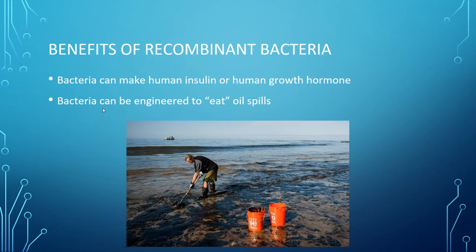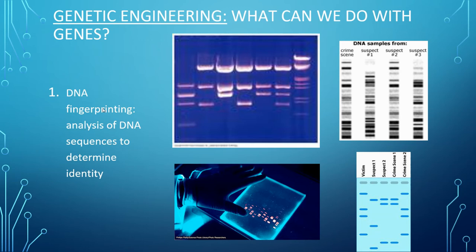Other genetic engineering applications: the first one is DNA fingerprinting. This is looking at DNA sequences to determine identities. We all have essentially unique DNA patterns. If we all use the same restriction enzymes to cut our DNA, we get different patterns. On the right here you can see DNA samples from a crime scene, suspect one, suspect two, suspect three — and you just match up the bands. You can clearly see that suspect two matches those bands exactly. So you can solve crime scene cases or paternity tests using DNA fingerprinting.